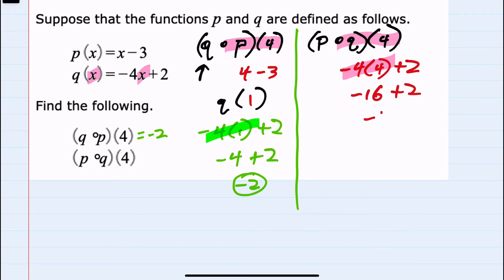Which simplifies to negative 14. But then we have to take that value into the p function. So replacing x in the p function with negative 14 would be negative 14 minus 3, which simplifies to negative 17. So our second composition is negative 17.